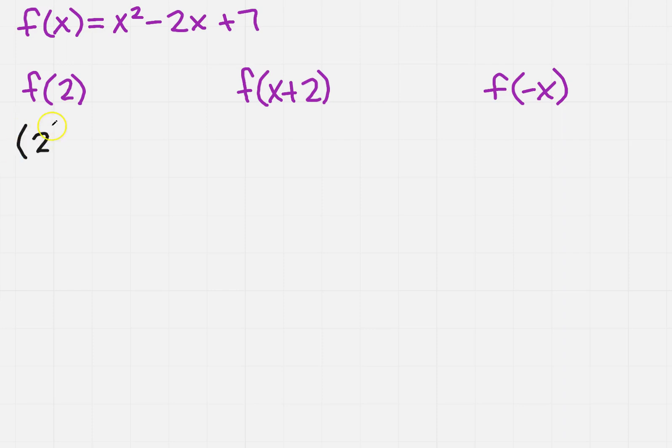So that's going to become 2 squared minus 2 times 2 plus 7. So I'm going to get 4 minus 4 plus 7. So those cancel, so I just get 7.